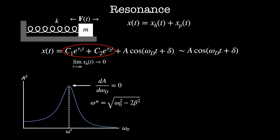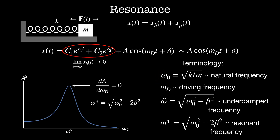We've introduced a lot of notation, so let me match it up with the physical quantities. Omega naught equals the square root of k over m — the natural frequency for the undamped oscillator. Omega_d is the driving frequency. Omega tilde equals the square root of omega naught squared minus beta squared — the underdamped frequency; with weak damping, the system oscillates at this slightly smaller frequency. And omega star equals the square root of omega naught squared minus 2 beta squared — the resonant frequency, the driving frequency needed to achieve the largest amplitude response.